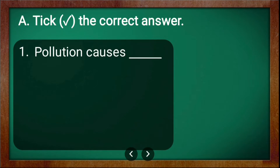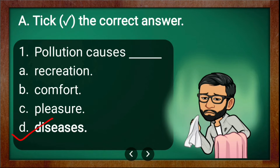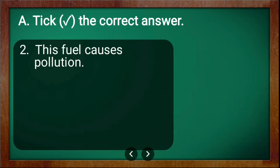Let us solve the first question: pollution causes — the options are recreation, comfort, pleasure, disease. The correct answer is pollution causes diseases. Because of the pollutants present in the air, it may cause disease, and sometimes it can be fatal also.